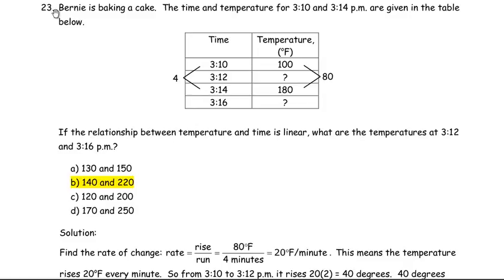Question 23 for Linear Relations EQAO Practice for Grade 9 Applied. We're told that Bernie is baking a cake. The time and temperature for 3:10 and 3:14 PM are given in the table below. So at 3:10 the temperature was 100 degrees Fahrenheit, and at 3:14 it was 180.